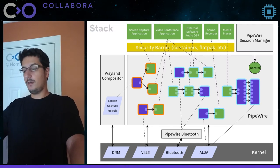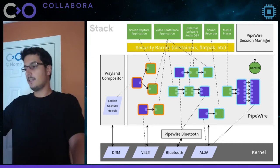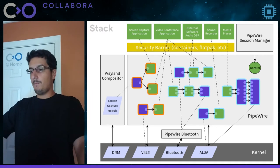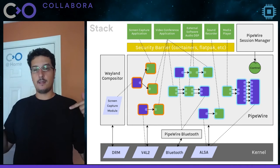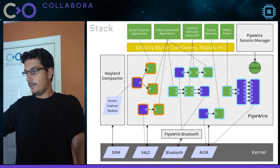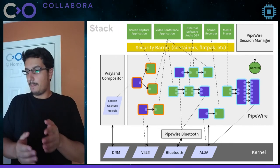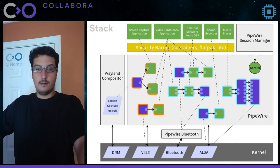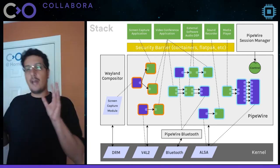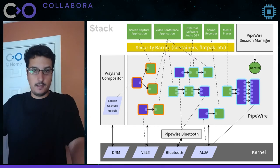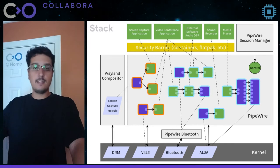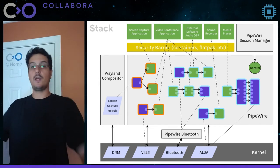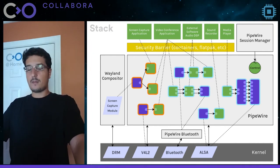Looking at the Linux multimedia stack when running the PipeWire daemon: at the bottom we have the kernel with all the different drivers, and at the top we have the different multimedia applications. PipeWire is a middle layer between those two, where applications connect to it, PipeWire manages those connections, and internally uses kernel low-level multimedia APIs. All of that is handled automatically by the session manager, which runs in a different process. So there are at least three processes: the application process, the PipeWire daemon process, and the PipeWire session manager process.